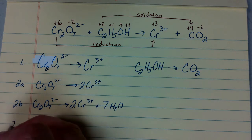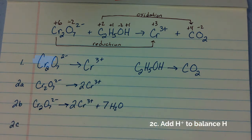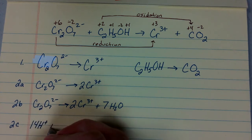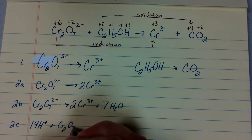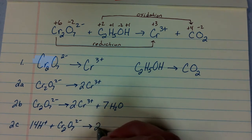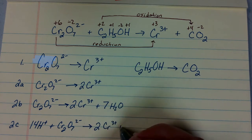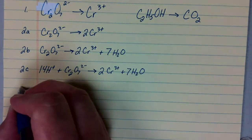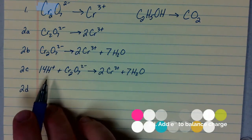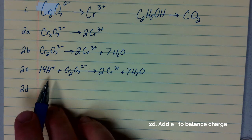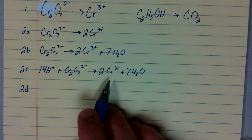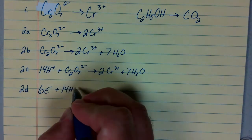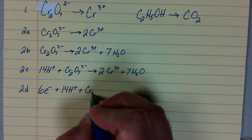Next, we're going to balance hydrogen atoms by adding H⁺ ions to whichever side is deficient in hydrogen. There are 14 hydrogens on the right, so we need 14 H⁺ ions on the left. Now we need to balance charge by adding electrons. There's a total charge of positive 12 on the left side and positive 6 on the right side. So we're going to add 6 electrons to the left side to bring the charge down to positive 6 on both sides.